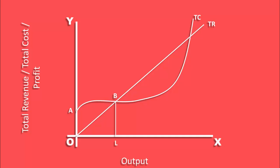To the left of output L, the producer cannot get any profit. In this region, total cost is greater than total revenue. The firm will incur loss.